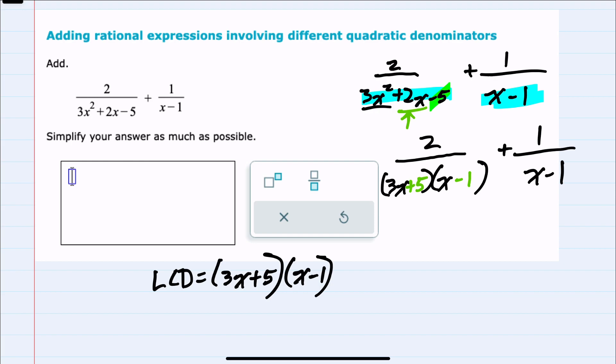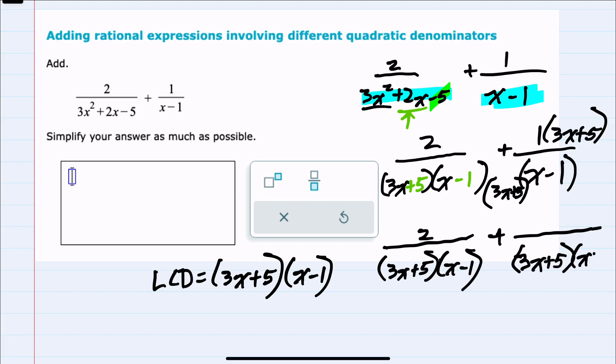I would want to rewrite each one of these fractions with this as the lowest common denominator. The first fraction is all set—it already has a 3x plus 5 and an x minus 1. But the second fraction only has an x minus 1. To get a common denominator, I would need to multiply that denominator by 3x plus 5, which means also multiplying the numerator by 3x plus 5. That would give me the necessary 3x plus 5 times x minus 1 in the denominator, and my new numerator is 1 times 3x and 1 times 5.